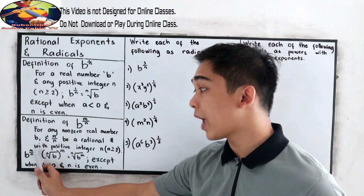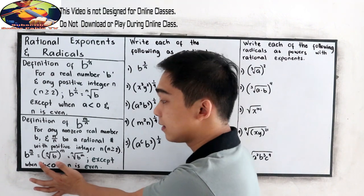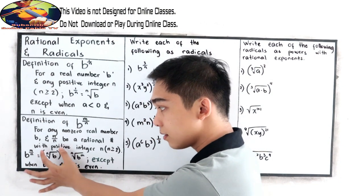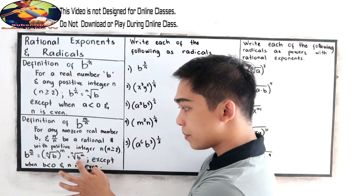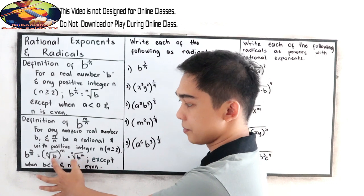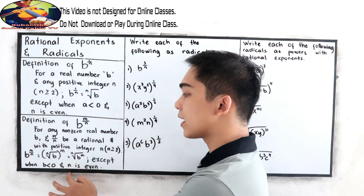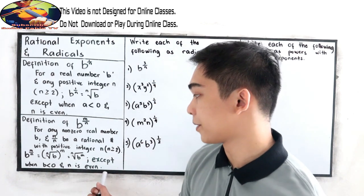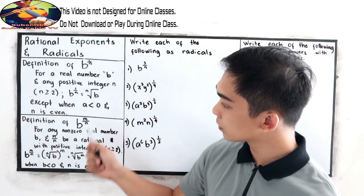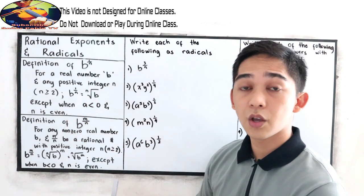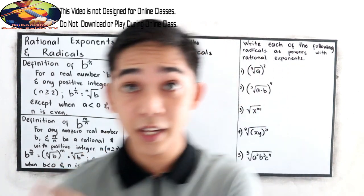So B raised to M over N, this will be the equivalent form in radical: N root of B, close parenthesis, raised to M, and equal to N root of B raised to M. These are the same, except when B is less than 0 and N is even number. So we're going to elaborate this using the following problems to better understand our definitions.